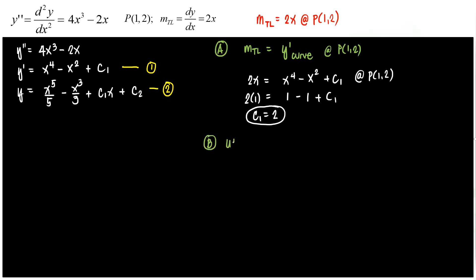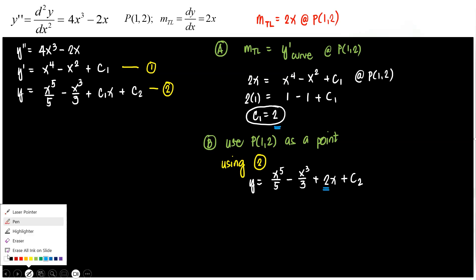Letter B. What can we do? Use point 1, 2 as a point. So, use point 1, 2 as a point. But then now, let's use equation number 2. Using equation 2. So, here in equation 2, y is x to the 5 over 5 minus x to the 3 over 3 plus do we already know what c1 is? 2, right? 2x plus c2. The 2 here is actually the 2 there.